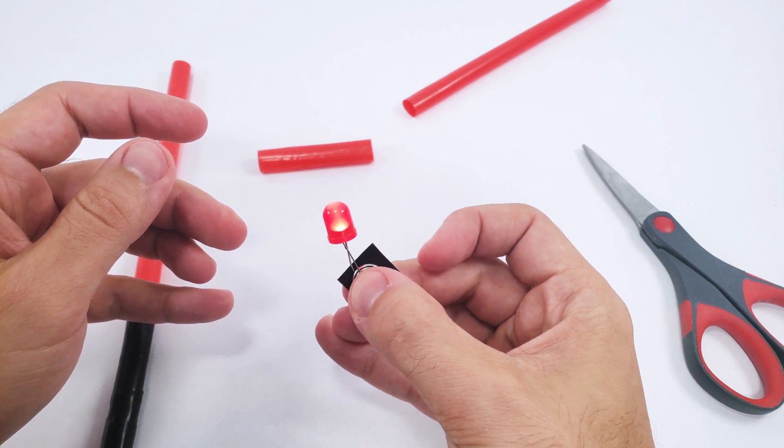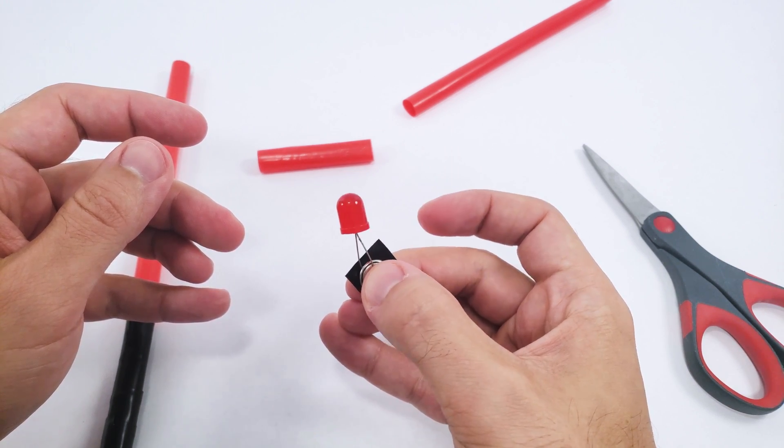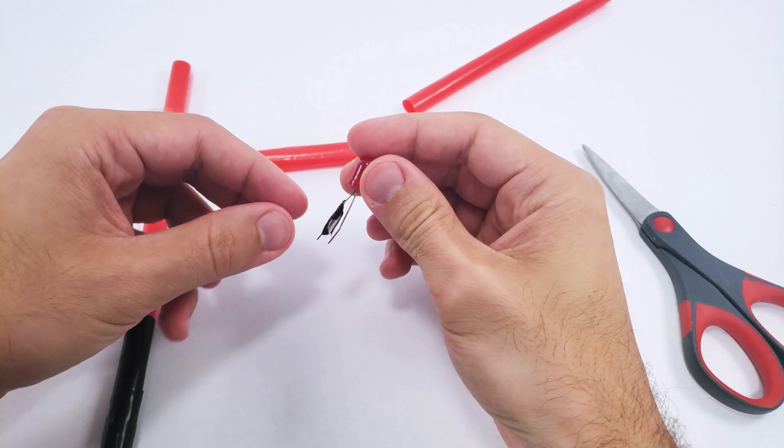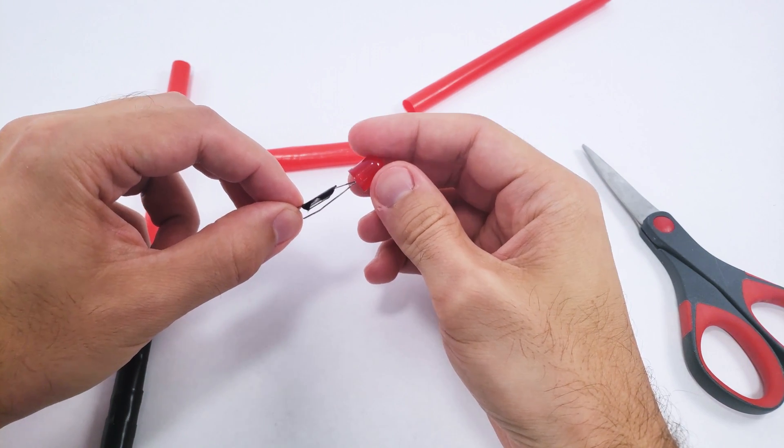Now, when I squeeze that together, the negative side contacts and the LED lights up. Now I need to get this LED into the handle. This is the tricky part.